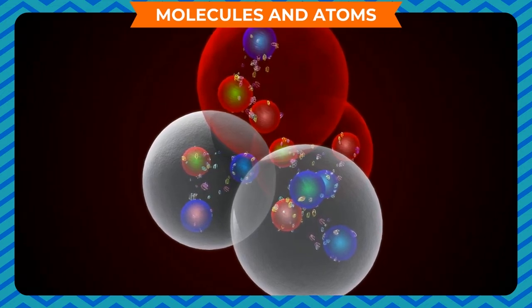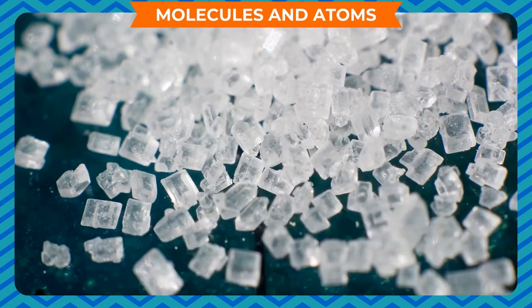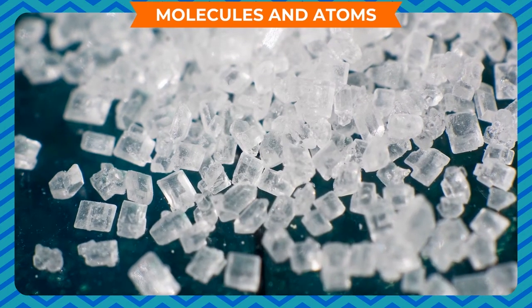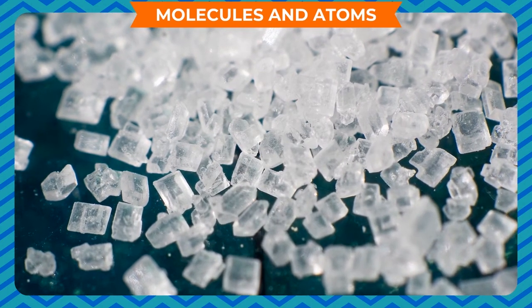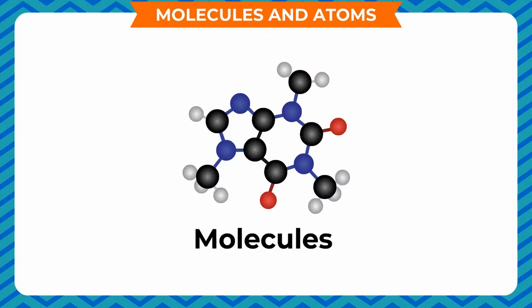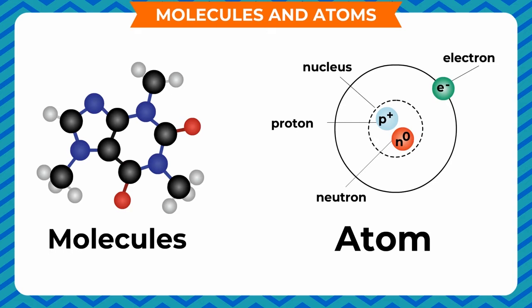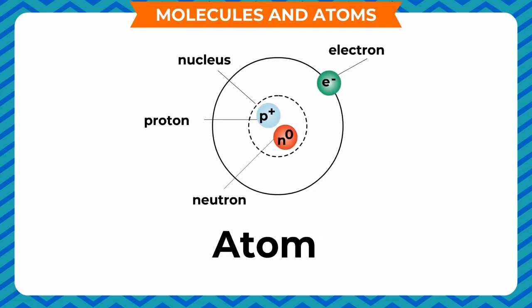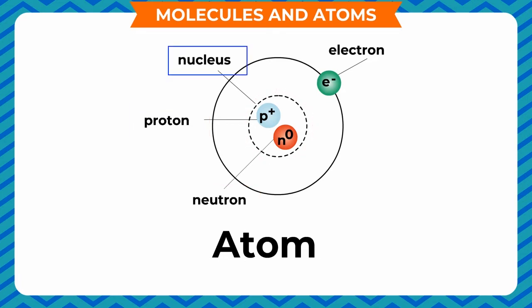For example, when a sugar molecule is broken down, it loses its sweetness. The smaller particles from which molecules are made are called atoms — the building blocks of matter. An atom consists of three particles: electrons, protons, and neutrons.